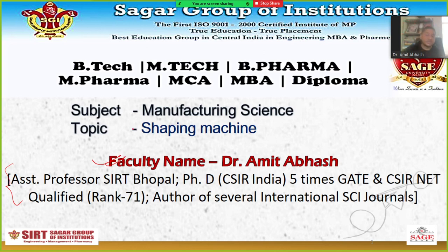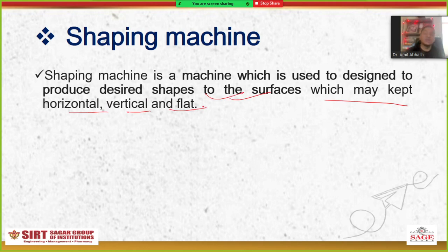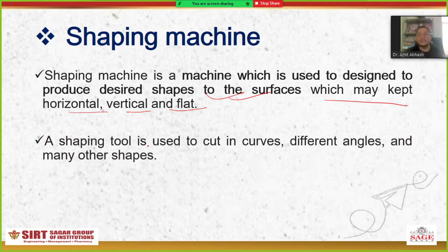So what is a shaping machine? The shaping machine is a machine which is designed to produce a desired shape of the surface, which may be kept horizontal, vertical, or flat. In all these three manners we can put the workpiece, and the workpiece will get a particular shape based on requirement. A shaping tool is used to cut in curves, different angles, and many other shapes.